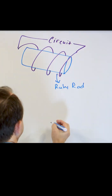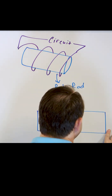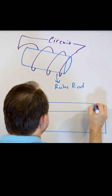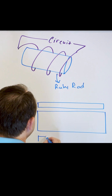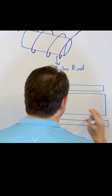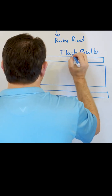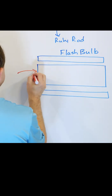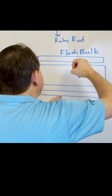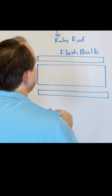Let's talk a little bit more about the ruby itself. I'll do a side view here. And then on the top, I'm gonna draw the flash bulb. The flash bulb I'm drawing as a rectangle, but really it's a coil that goes all the way around it like this. So this is the flash bulb, and then down here, this thing is the ruby. So what's happening is the flash bulb is flashing and flashing and pumping the electrons up into the population inversion on the inside.